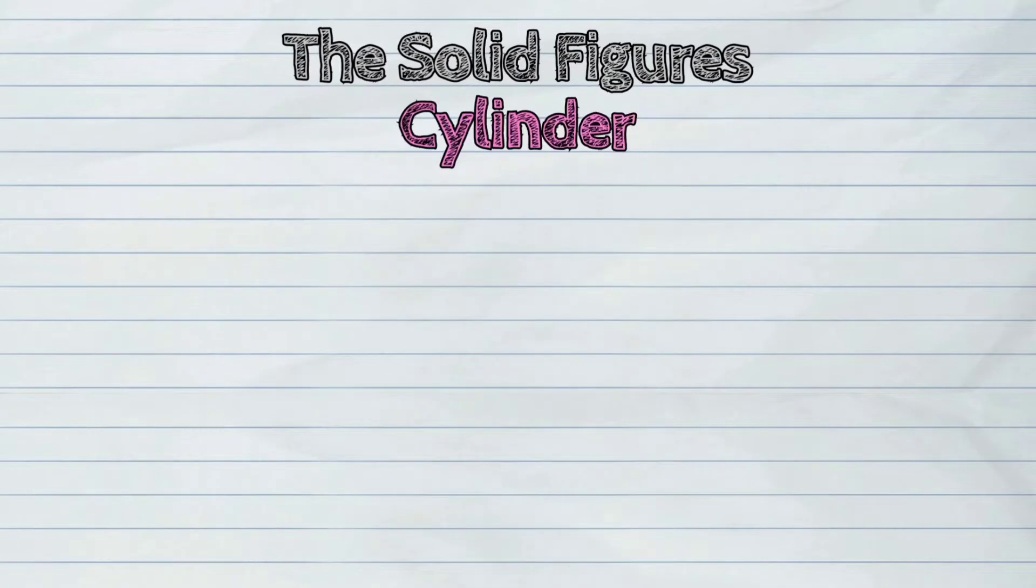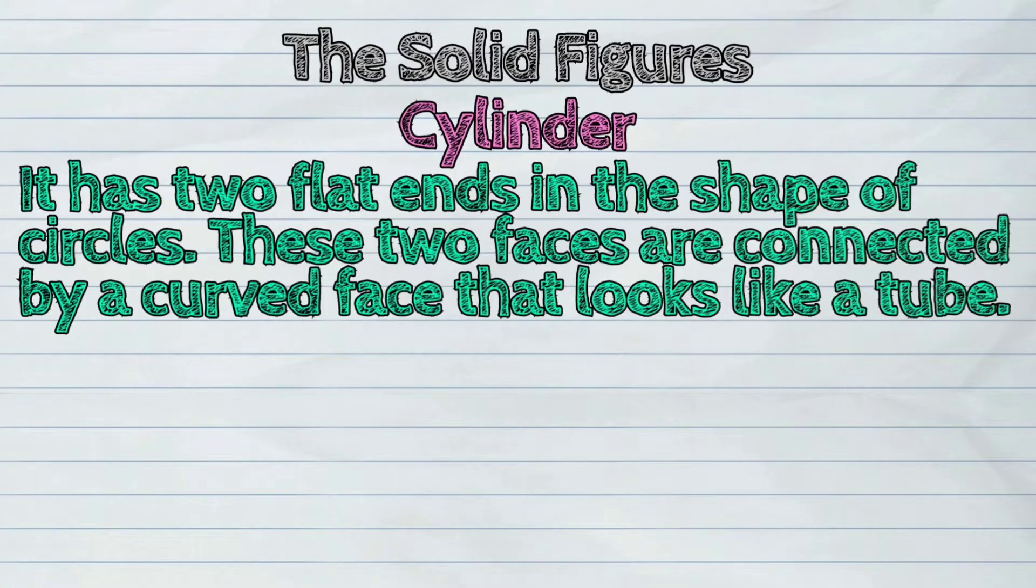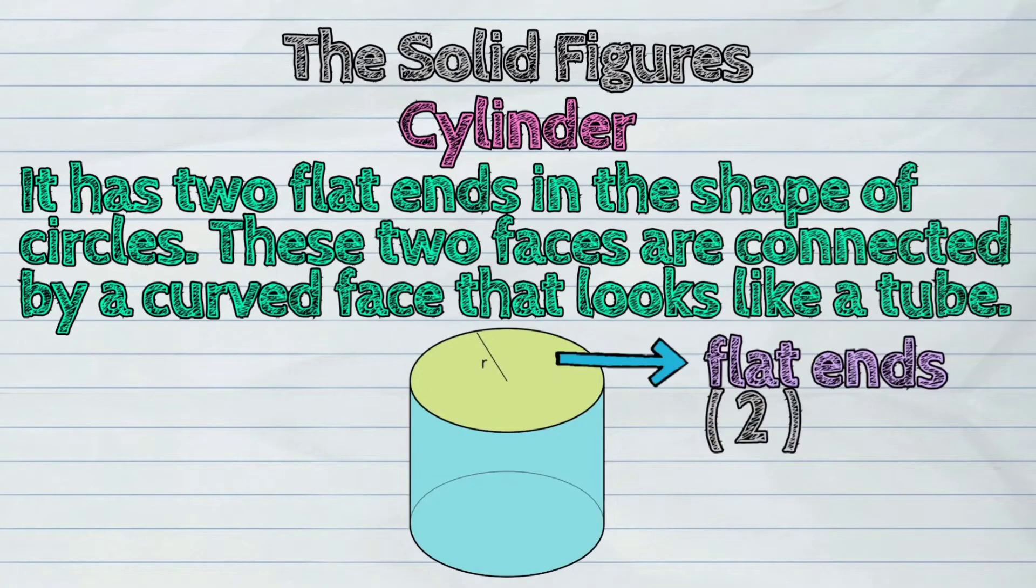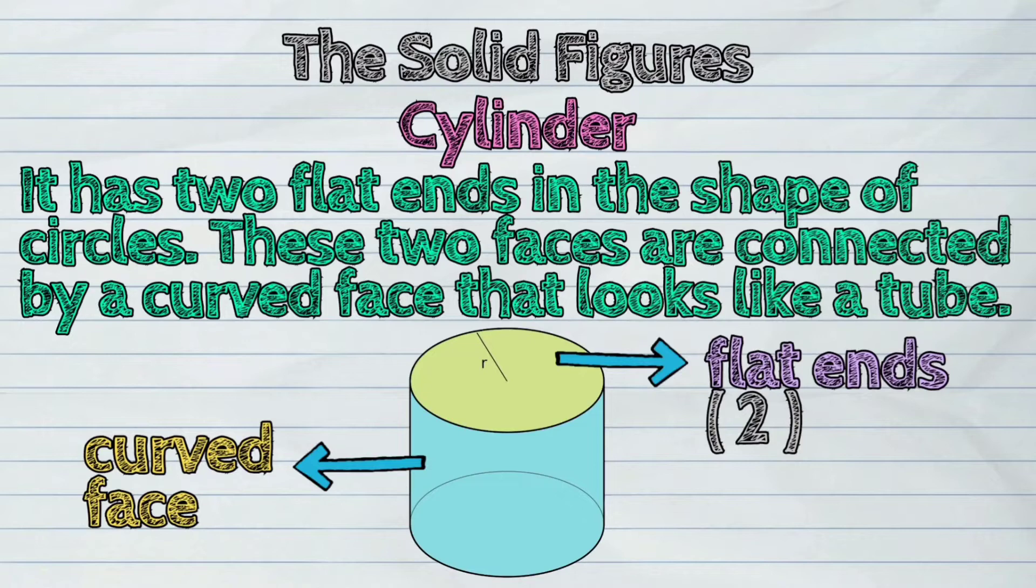Fourth, the cylinder. It has two flat ends in the shape of circles. These two faces are connected by a curved face that looks like a tube.